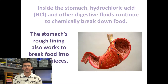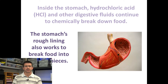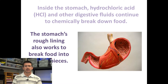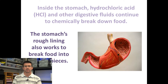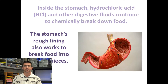Once the food reaches our stomach, it continues the digestion process through both chemical and mechanical digestion again. In the stomach, we have hydrochloric acid along with digestive enzymes to break the food down and start taking nutrients out. The muscles lining the stomach also work to shift the food around and break it into smaller pieces.